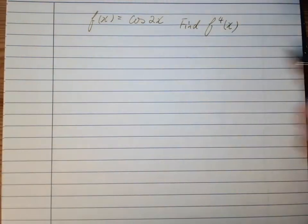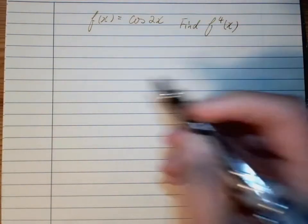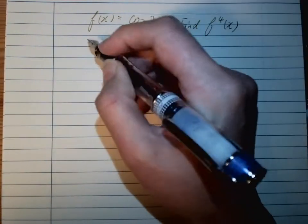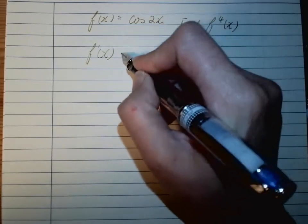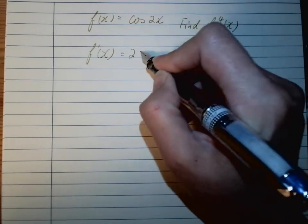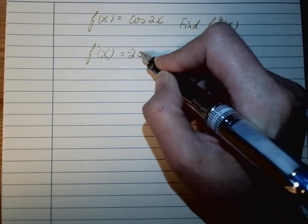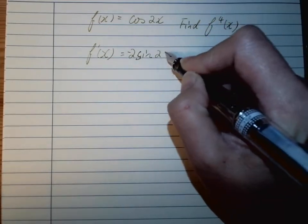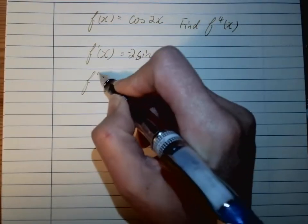All you need to do is differentiate it four times. First time, we're performing the chain rule, so cosine becomes negative sine: f'(x) = -2sin(2x).